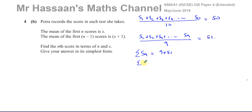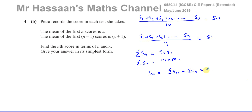And the sum of the first 10 scores is going to be 10 times 50. So the 10th score itself is going to be the sum of the first 10 scores minus the sum of the first 9 scores. In this case, it's going to be 10 times 50 minus 9 times 51. And that will give you what the 10th score is.